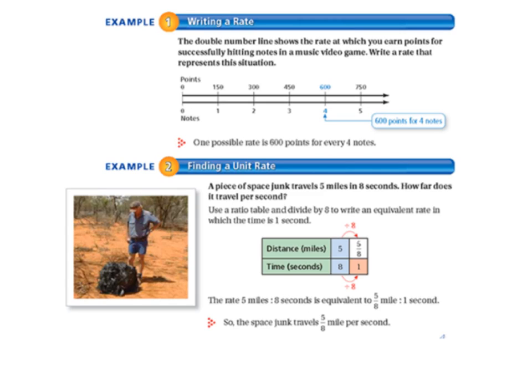Example 1, writing a rate. The double number line shows the rate at which you earn points for successfully hitting notes in a music video game. Write a rate that represents this situation. So we have a number line for points on the top and a number line for notes on the bottom. On the points number line, when you hit one note, you earn 150 points.